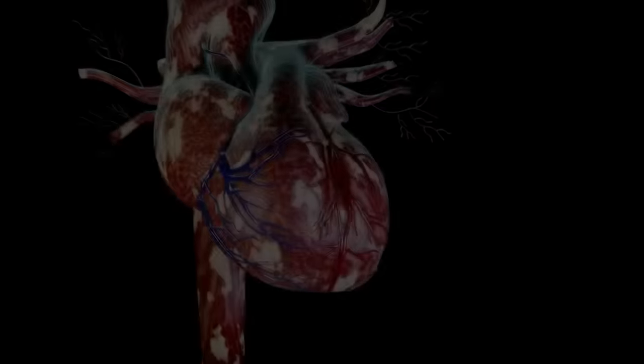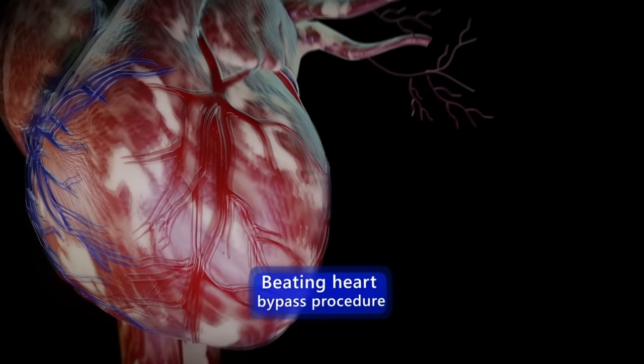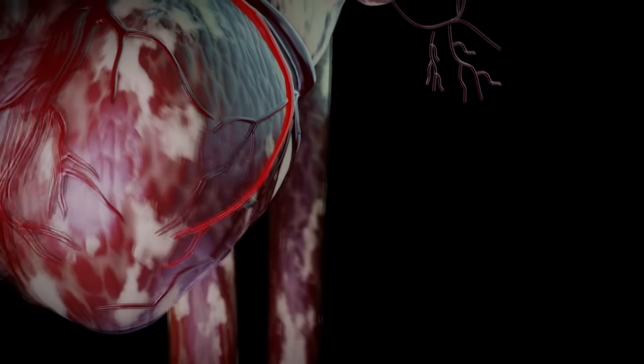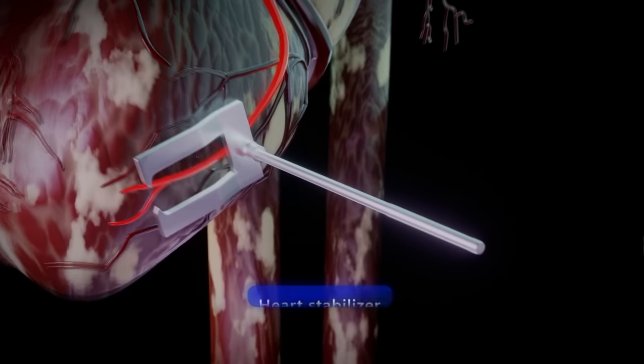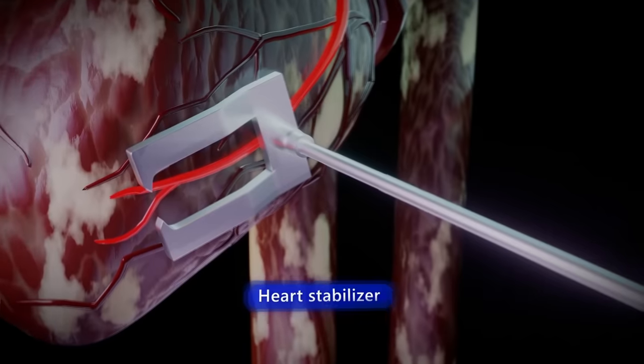In the off-pump CABG or beating heart bypass procedure, the heart does not stop and a cardiopulmonary bypass machine is not used. Instead, a mechanical device called the heart stabilizer is used to stabilize the part of the heart being grafted.